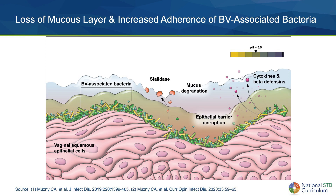Loss of the protective mucus layer on the vaginal epithelium leads to increased adherence of other BV-associated bacteria, such as Fannyhessa vaginae and Sneathia species, amongst others, which join the BV biofilm, leading to the formation of a mature polymicrobial entity.